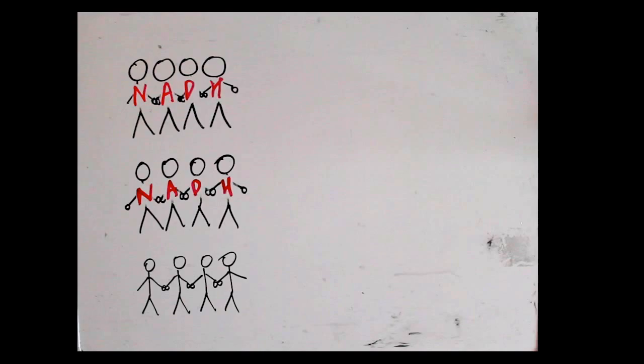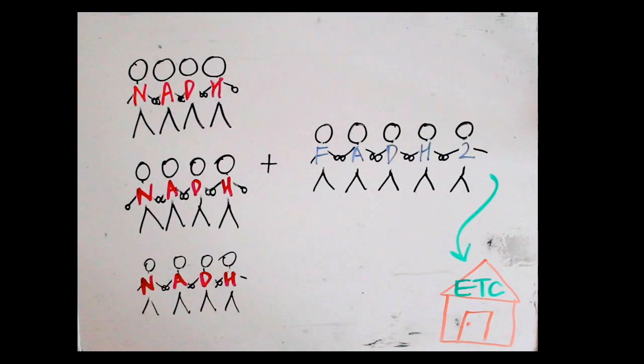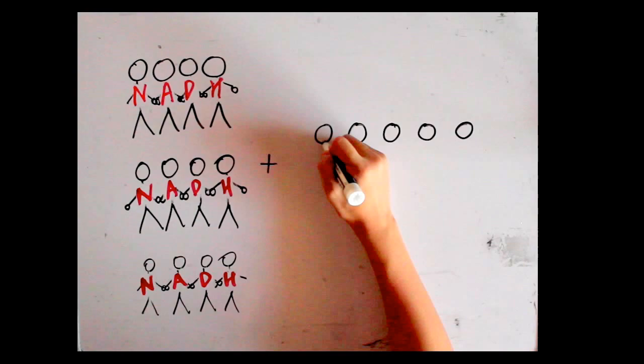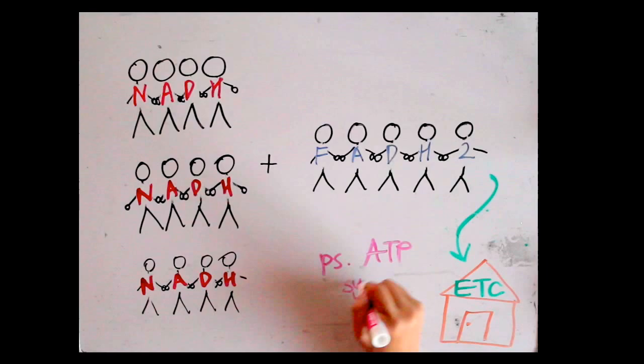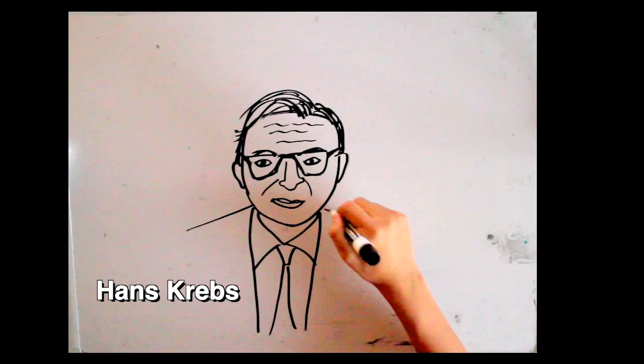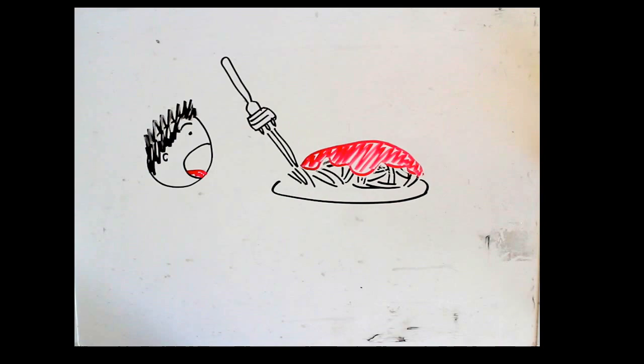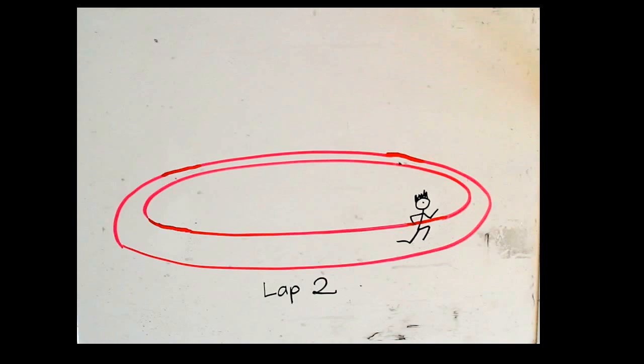Krebs cycle, Krebs cycle: 3 NADH, 1 FADH2, which later goes to the ETC. Krebs cycle, Krebs cycle: 3 NADH, 1 FADH2 creation, and the synthesis of 1 ATP.